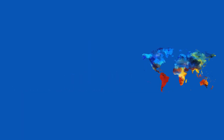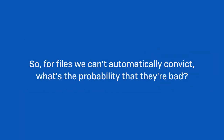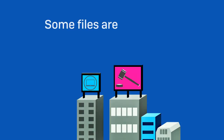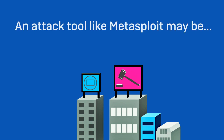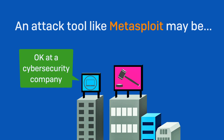So we want to know, for files that we couldn't automatically convict as bad, what's the probability that they're bad? Some files are ambiguous. For example, an attack tool like Metasploit may be normative in the context of a pen testing company, but not normative at a law firm. So a lot depends on context when it comes to detection.